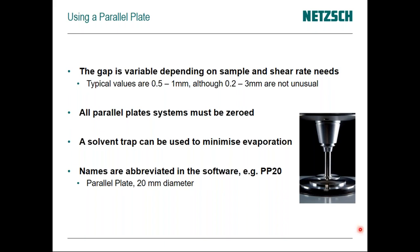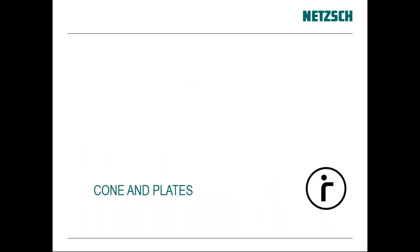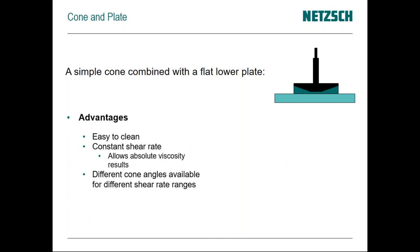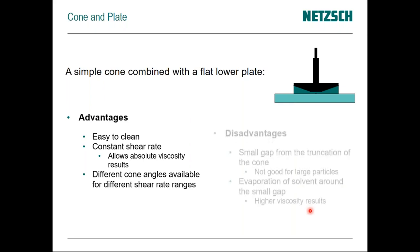The abbreviated naming uses 'PP20' for parallel plate, or 'CP' for cone and plate. Cones and plates are similarly easy to wipe clean and give you absolute viscosity results. The narrower the cone angle, the higher the shear rate — going to a half-degree cone gives twice the shear rate of a one-degree cone, which gives twice that of a two-degree cone. The cone angle is proportional to the shear rate obtained, multiplied by the rotational speed. Easy to clean, constant shear rate across the sample, and different cone angles give different shear rate ranges — different gearing.